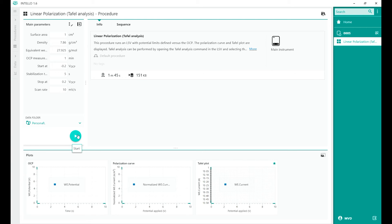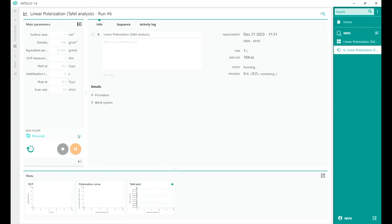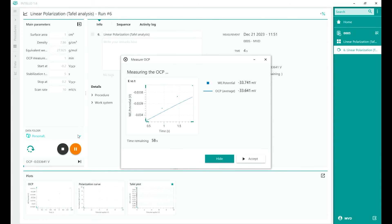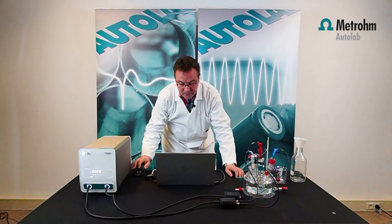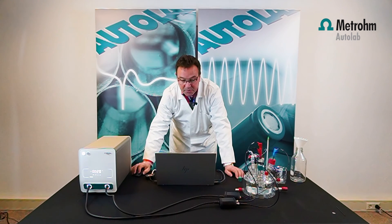First, we press start. The OCP is measured, so we're measuring the OCP with respect to time. Normally you do this for a very long time, but for this video we're going to decrease that time and just accept the values which we have. We accept the OCP value. Be sure that the Luggin capillary is close and the reference electrode is connected. We can accept the OCP value.